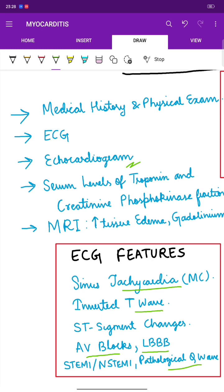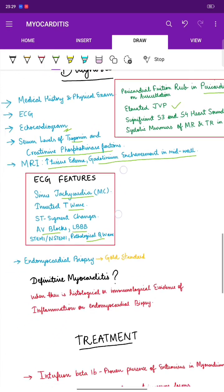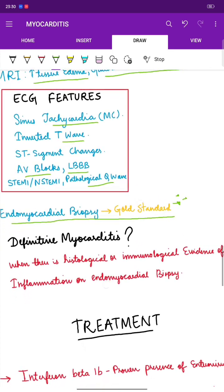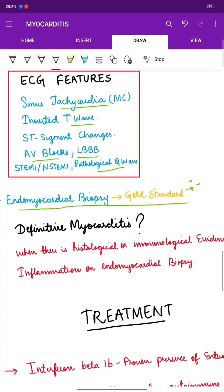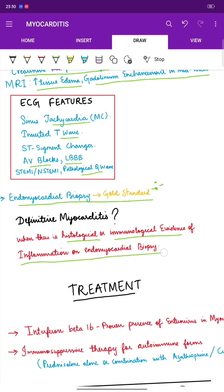Echocardiogram is also a diagnostic option. We check serum levels of troponin and creatinine phosphokinase fractions. MRI shows increased tissue edema and gadolinium enhancement in the mid wall. Endomyocardial biopsy is the gold standard. Definitive myocarditis is confirmed only when there is histological or immunological evidence of inflammation on endomyocardial biopsy.